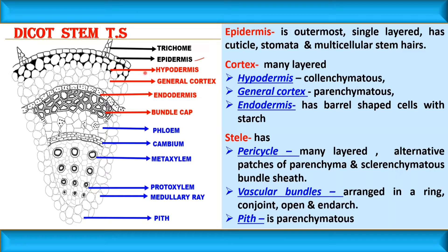The epidermis bears cuticle, stomata, and importantly multicellular stem hairs called trichomes. Following the epidermis is the hypodermis, which is made up of collenchyma — you can see the corner thickening, which is important to draw. The next layer is the general cortex, which is parenchymatous. Then comes the endodermis, an important layer that appears wavy in outline and stores starch — that is why it is called the starch sheath.